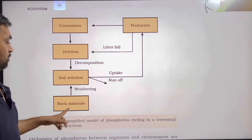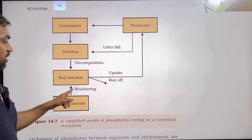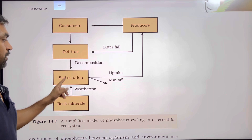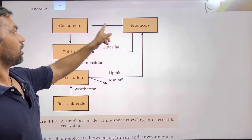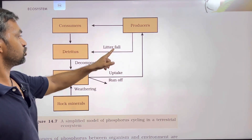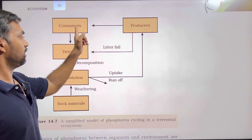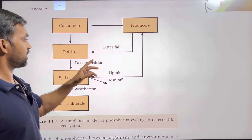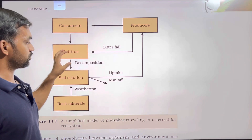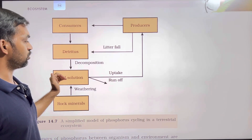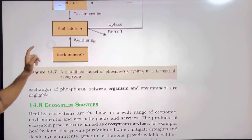The phosphorus cycle pathway is: rock minerals undergo weathering and breakdown, releasing phosphorus into the soil solution; plants take up phosphorus from the soil; consumers feed on plants; detritus forms from dead plants and consumers; decomposition returns phosphorus back to the soil solution.